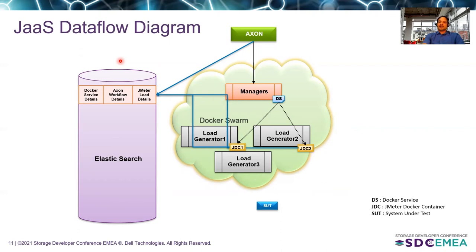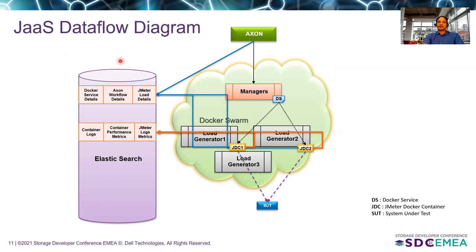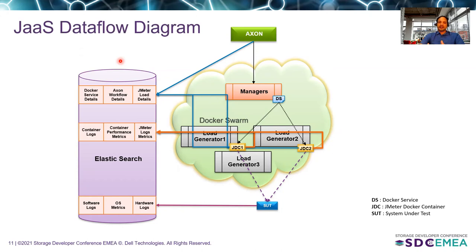Once the JMeter scripts are available in the container, it uses the script to start generating load on the system. At the same time, the JMeter Docker containers send all information related to container logs, container performance metrics, and JMeter logs into the database. We also collect all server-related information — software logs, OS metrics, and hardware logs — from the server into the database. With both container logs and server data, we are able to correlate and display a live dashboard showing different artifacts, useful for both live and historical data analytics.